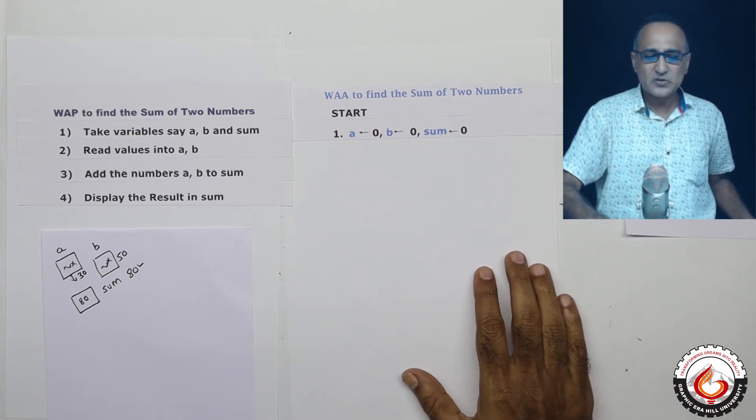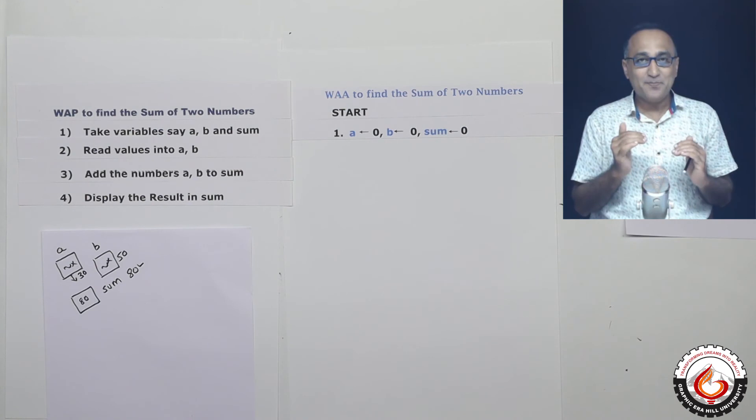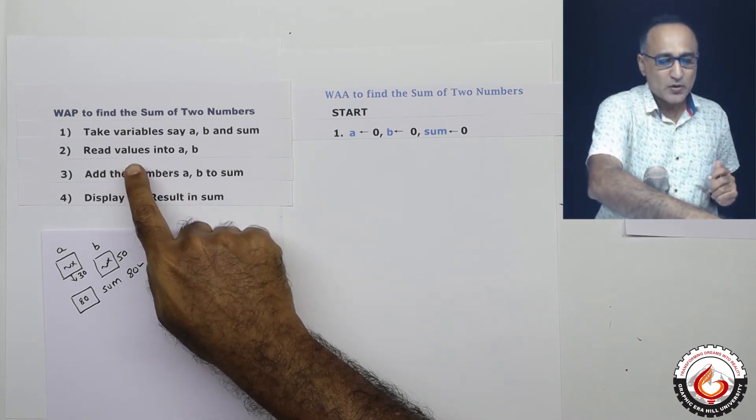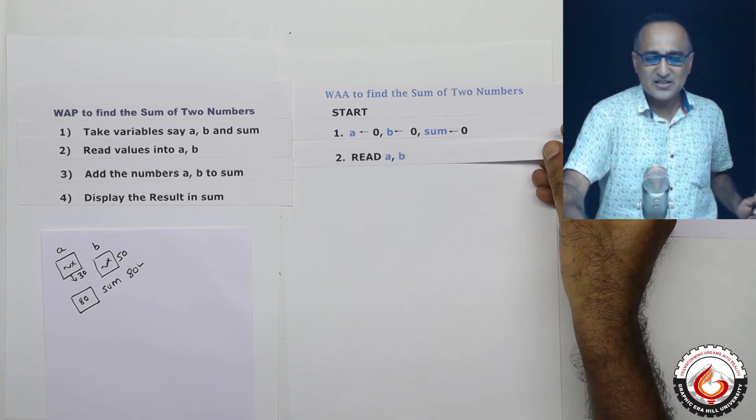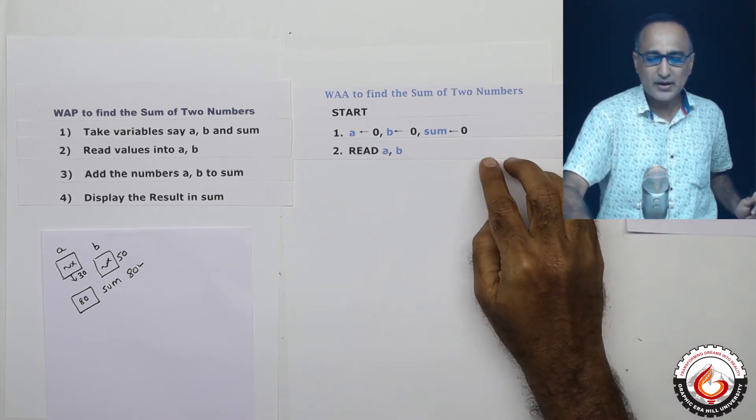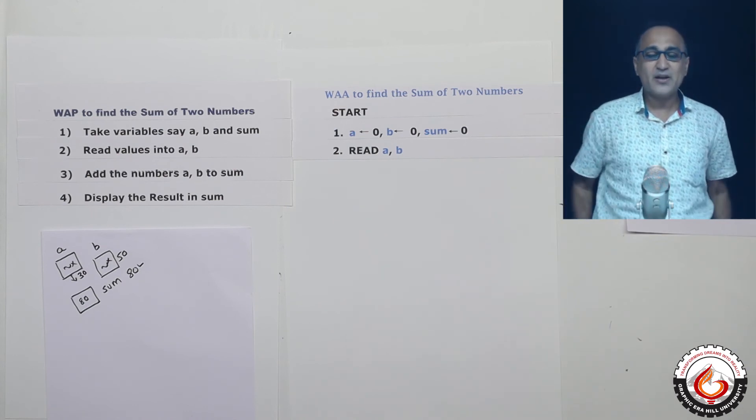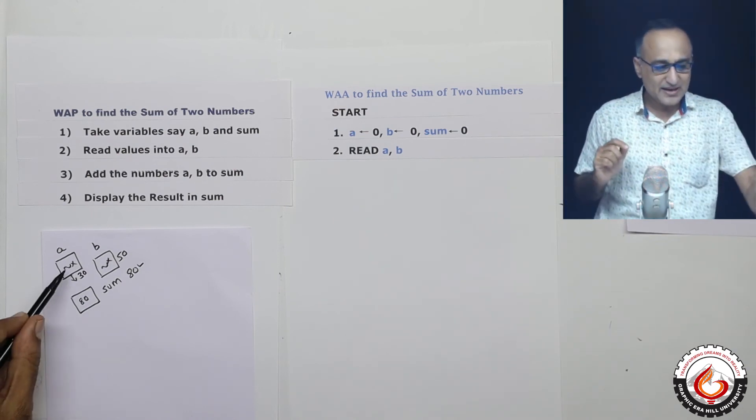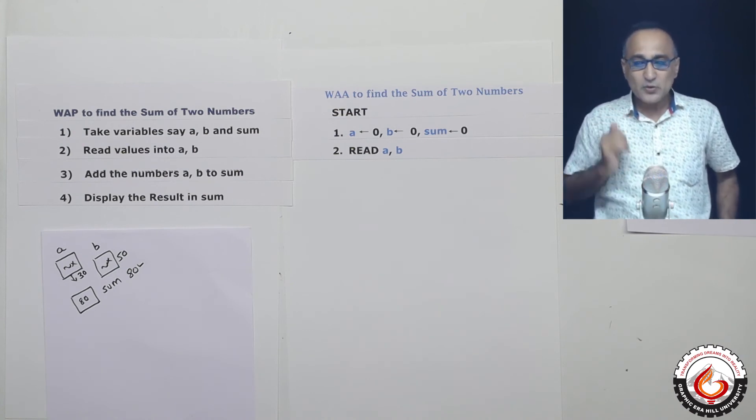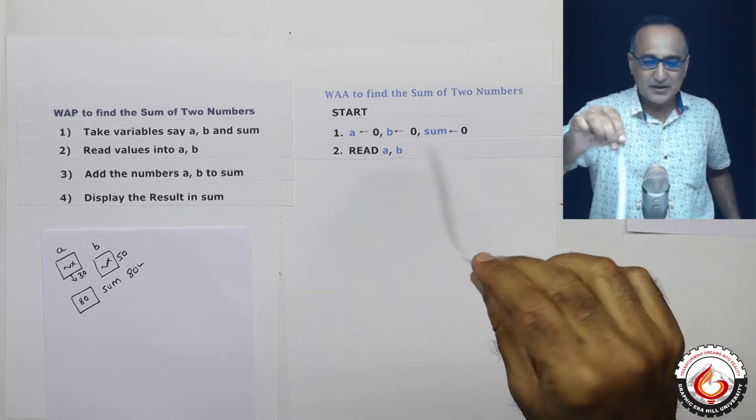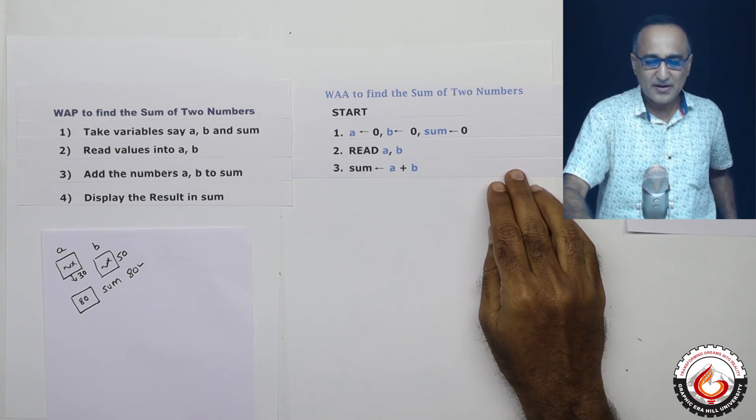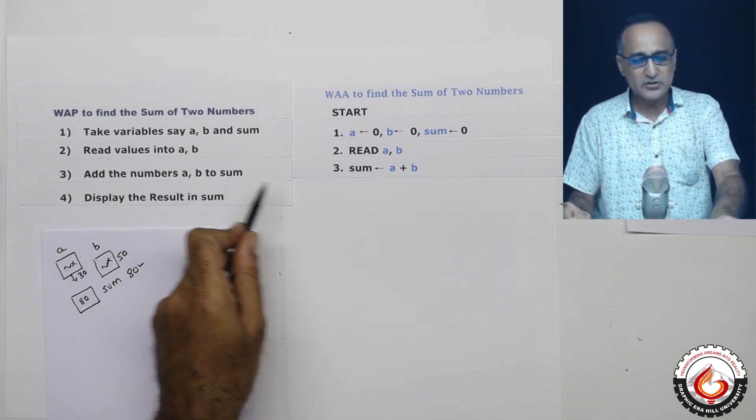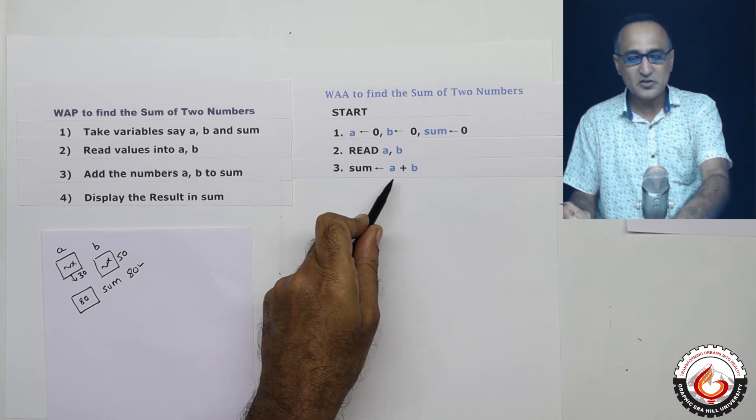Now followed by this, what I am going to do is in order to calculate the sum, look what I am doing in the pseudocode. I am saying read values into a and b. So I am saying the next step is read values into a, b. Okay, here I am reading the values into memory locations a and b. After this, what is the third step? Third step is sum is assigned the value a plus b. Okay, so third step is like this. So here if you say add the numbers a, b to sum, in algorithm it is shown like this.